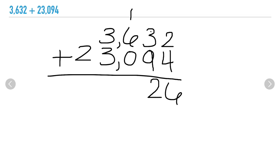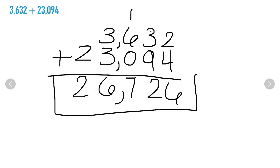One plus six plus zero, then three plus three — good. And two plus nothing. So 3,632 plus 23,094 is 26,726.